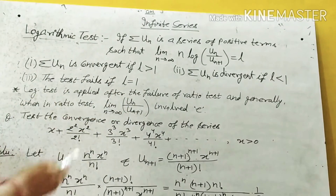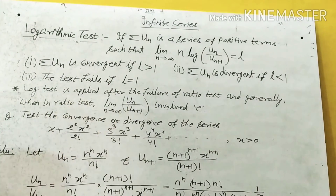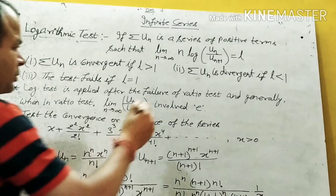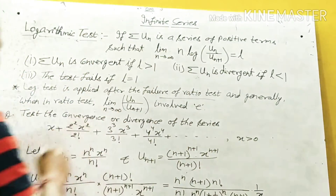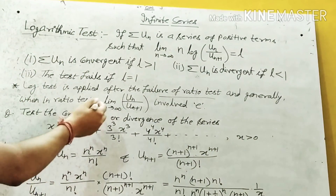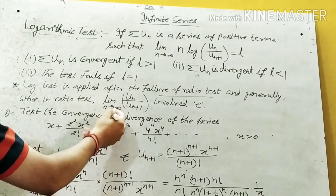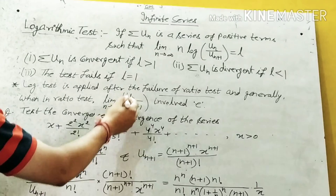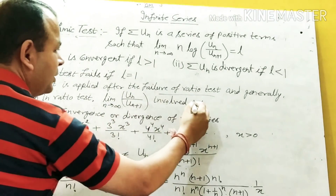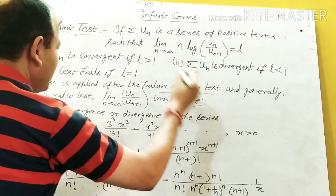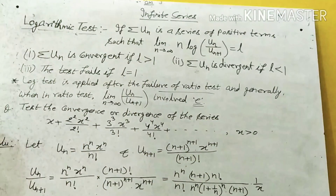The logarithm test is applied after the failure of the ratio test. Generally, when in the ratio test the limit as n tends to infinity of un upon un+1 involves e, then we apply the logarithm test.